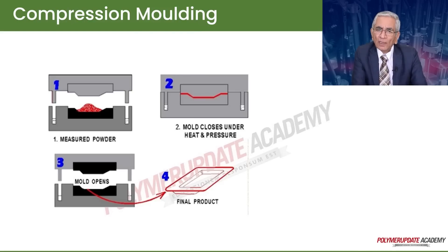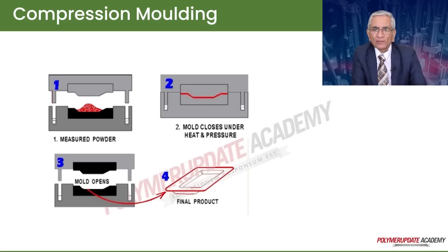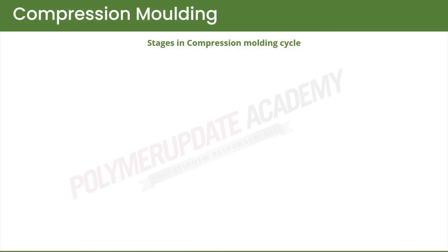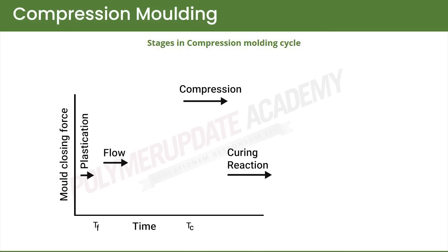A typical mold is shown here. The molded part, as you can see on the right side, is the final product. The process sequence is: material is charged, mold is closed, material hardens, mold opens, and the product is removed. The molding cycle shows how the molding clamp force changes with time. Initially, while the mold is being lowered, material is charged — this is known as the time tf — and pressure slowly increases.